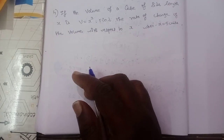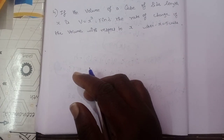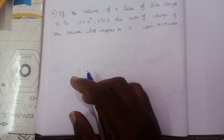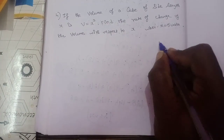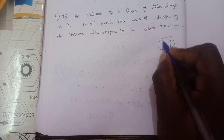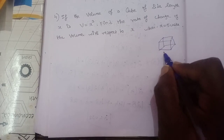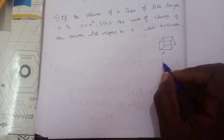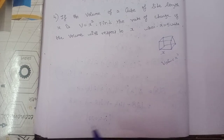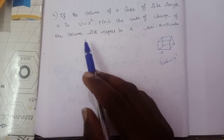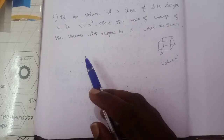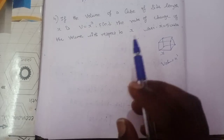Number 4. If the volume of a cube of side length x is V = x³, find the rate of change of the volume with respect to x when x is equal to 5.